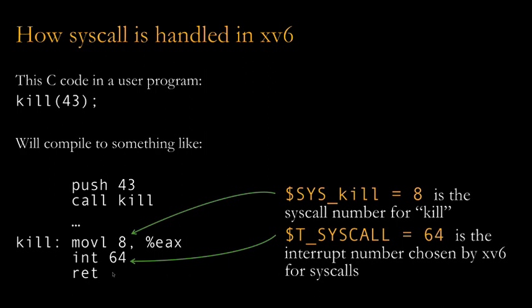Every system call is going to call int 64. Once that's done, this function returns and execution resumes in the user program after the kill function was invoked.